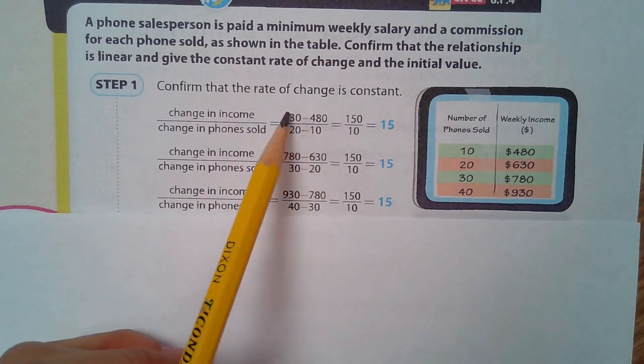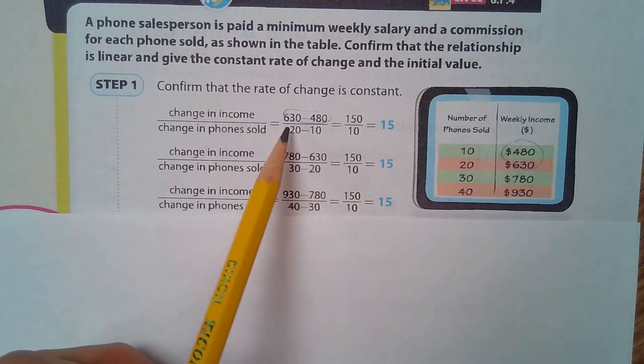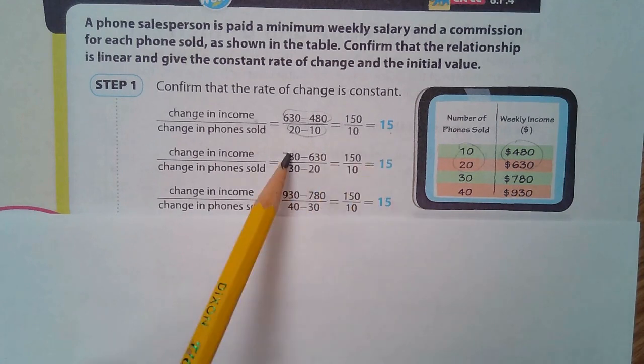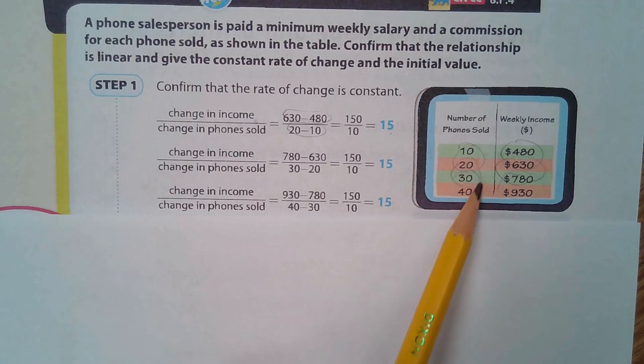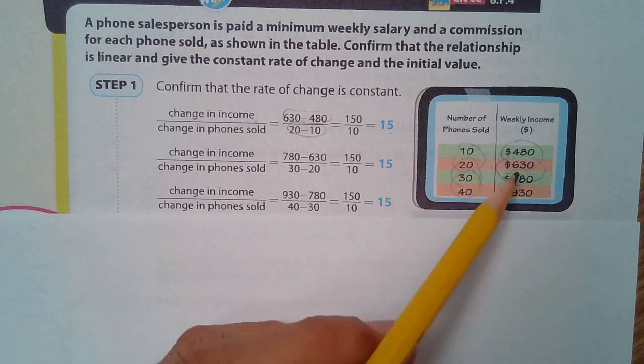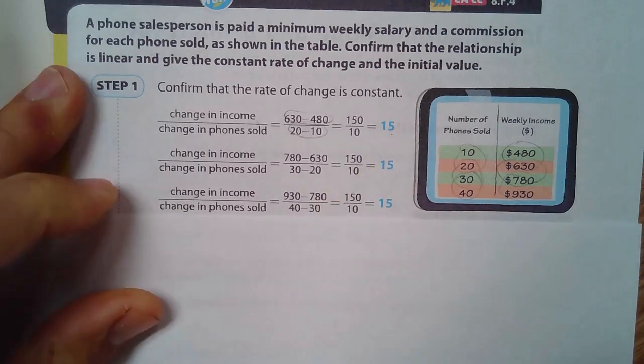If we subtract the y-values over subtract the x-values, we get 15. Subtract these over these, you get 15. Subtract these values over these values, and you still get 15. So it's a constant rate of change. The change in y over the change in x is the same. You go up 15 and over 1.